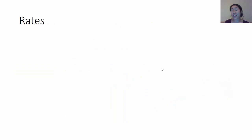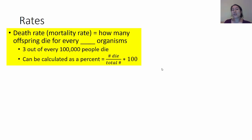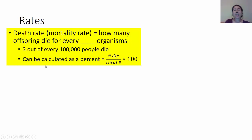For background information, there are a couple of rates discussed in your homework and in this section of the book. One is the death rate, or mortality rate. Mortality simply means death or dying. The death rate is calculated by how many organisms die for every certain number of organisms — for example, three out of every 100,000 people die. You can calculate that as a percentage: the number that die divided by the total number, times 100.